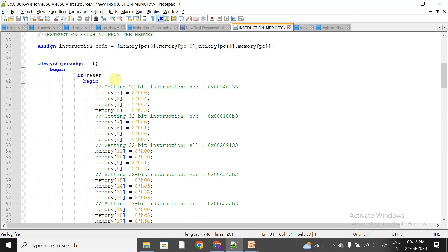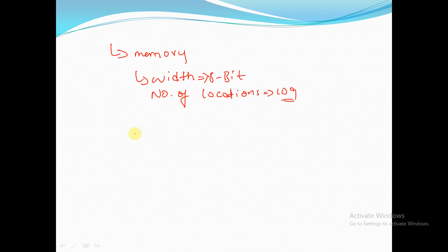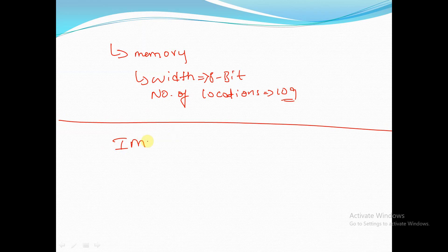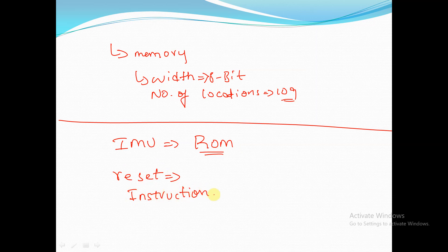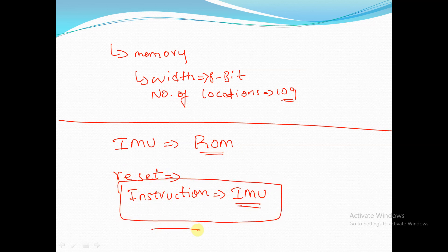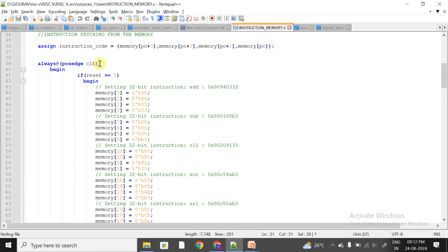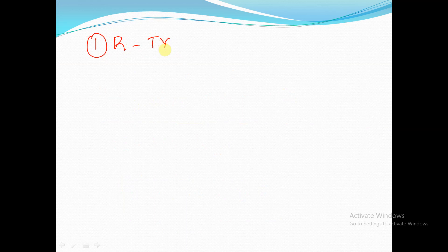The Instruction Memory Unit is basically a ROM — Read-Only Memory. After applying the reset signal, all instructions are by default stored inside this IMU. At the positive edge of the clock, if the reset signal is applied, I am automatically storing all the instructions. From this session we will start with R-type instructions.